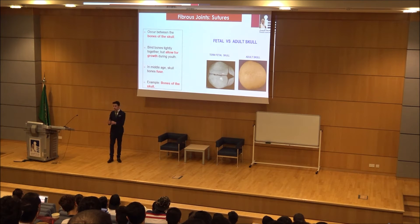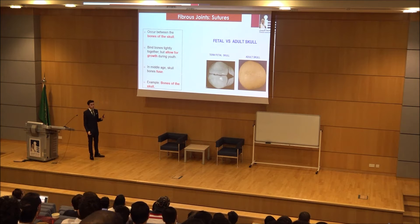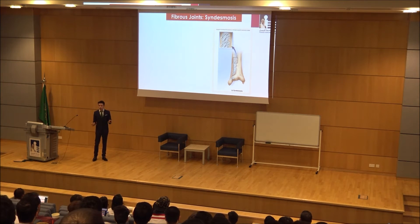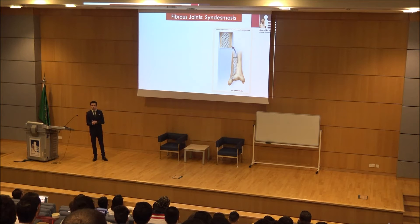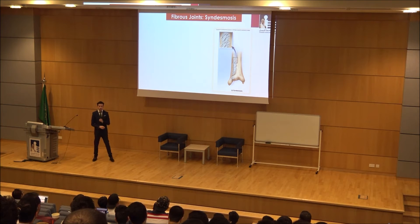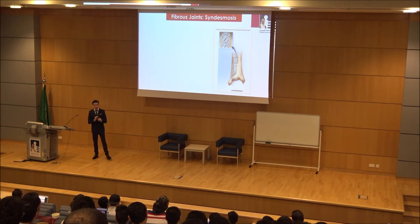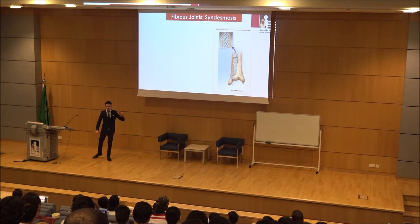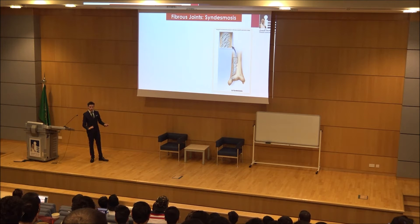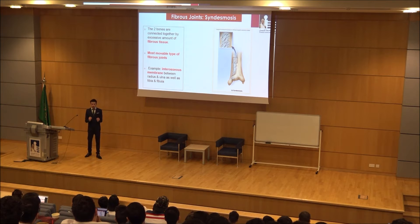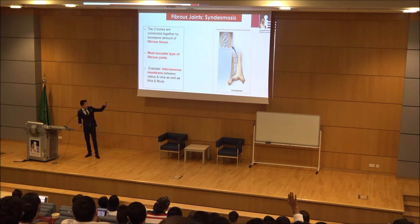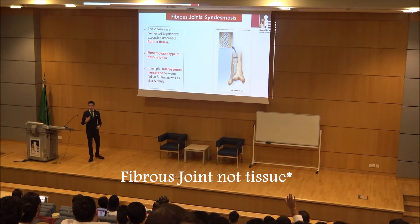The second subtype is syndesmosis. A useful technique: whenever you read the words 'interosseous tissue' or 'interosseous membrane,' know immediately that this is a syndesmosis joint. For example, the interosseous membrane of the radius and ulna — that's syndesmosis. This is the most mobile and most movable type of fibrous joint.